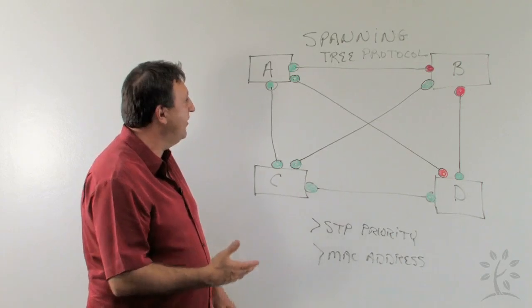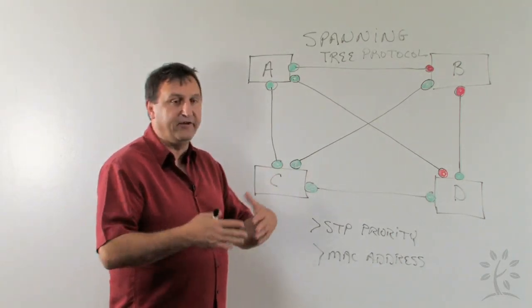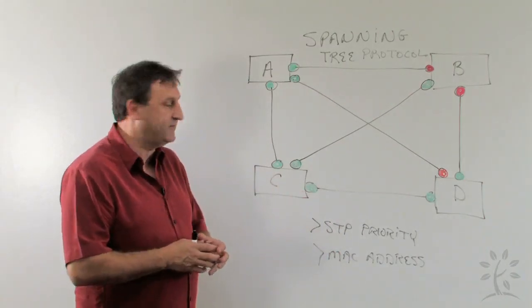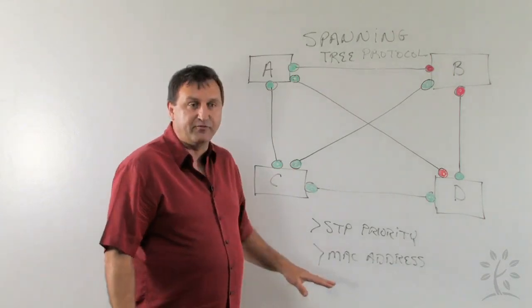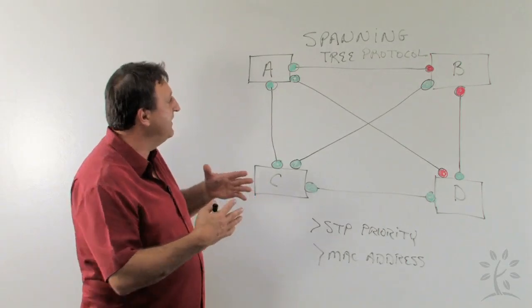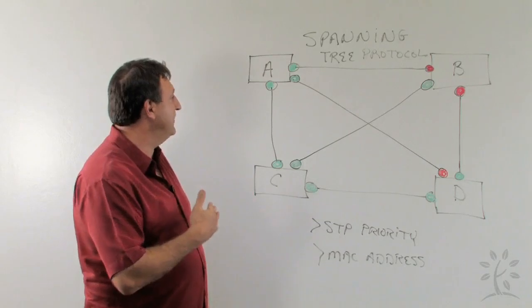Out of the box, all of these switches basically will have the same Spanning Tree priority. If we don't go in and do any type of configuration on them, they'll all have exactly the same Spanning Tree priority. So what would happen is the switch that has the lowest MAC address would be elected to root. And all the other switches then will try to establish the shortest possible path back to that root switch.